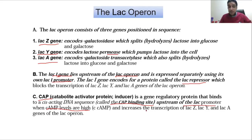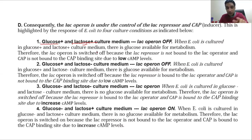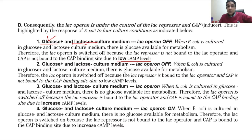When cyclic AMP levels are high, it increases transcription of lacZ, lacY, and lacA — meaning the system can now utilize lactose. There are four possible conditions. First: glucose and lactose are both present. The primary energy source, glucose, is available. In the presence of glucose, cyclic AMP levels stay low — just keep that in mind. So even though lactose is there, it is not the preferred energy source.